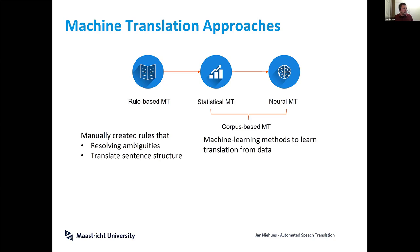There have to be rules describing how we can translate the structure of a source sentence into the structure of the target sentence. However, language is really complicated, and when people developed these systems they found they needed more and more rules to cover real-life situations.